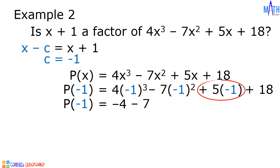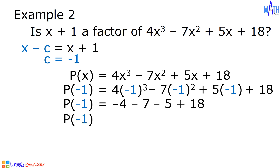Next, 5 times negative 1 equals negative 5, plus 18. And we have p of negative 1 equals negative 4 minus 7, which is equal to negative 11. Negative 11 minus 5 is negative 16. Negative 16 plus 18 is equal to positive 2. p of negative 1 is not equal to 0.